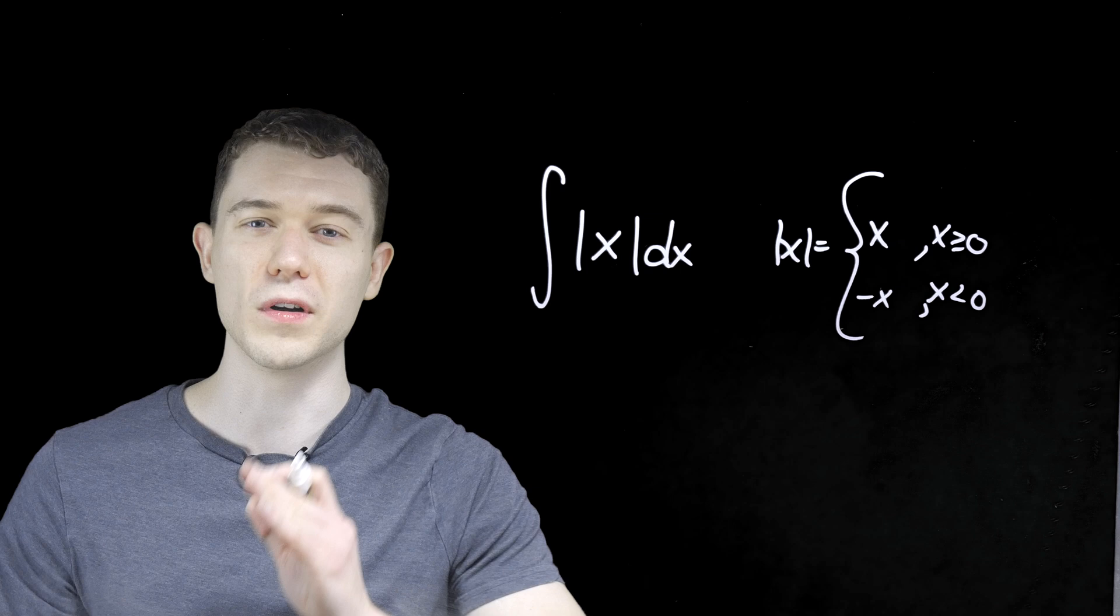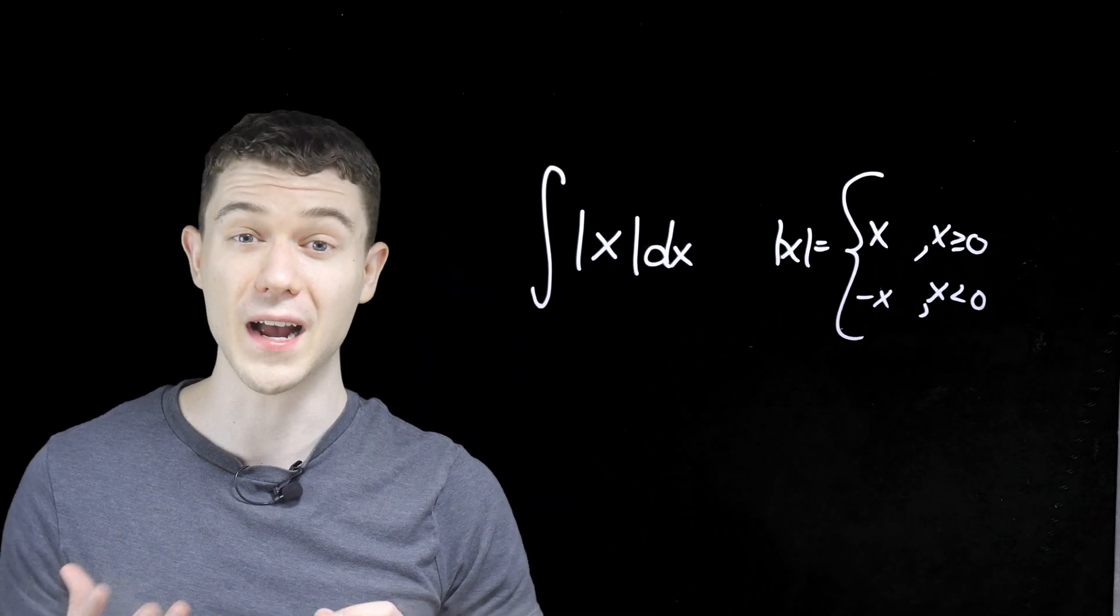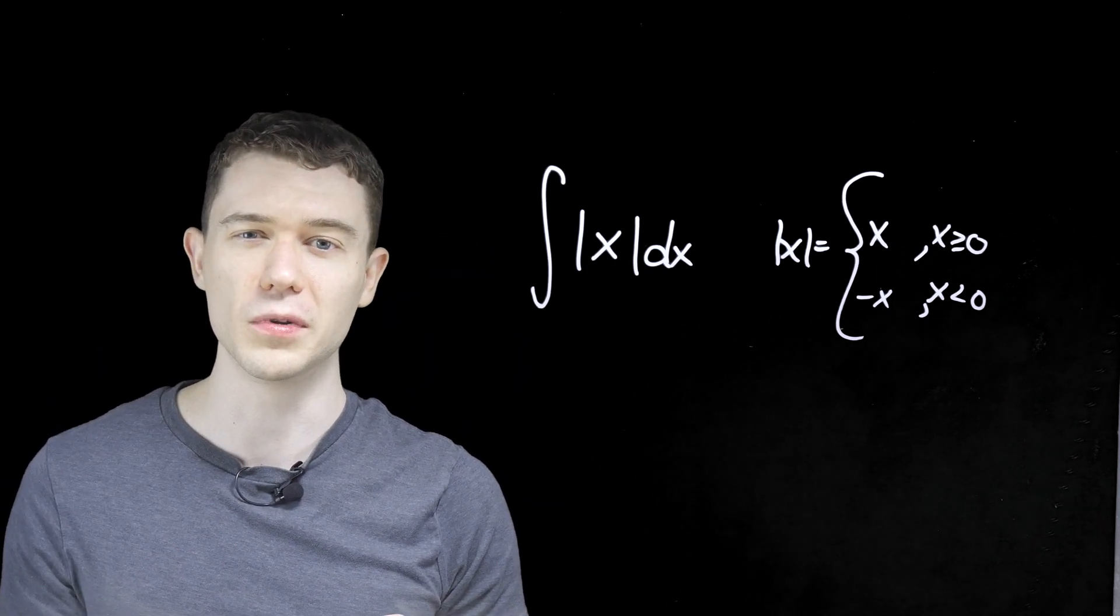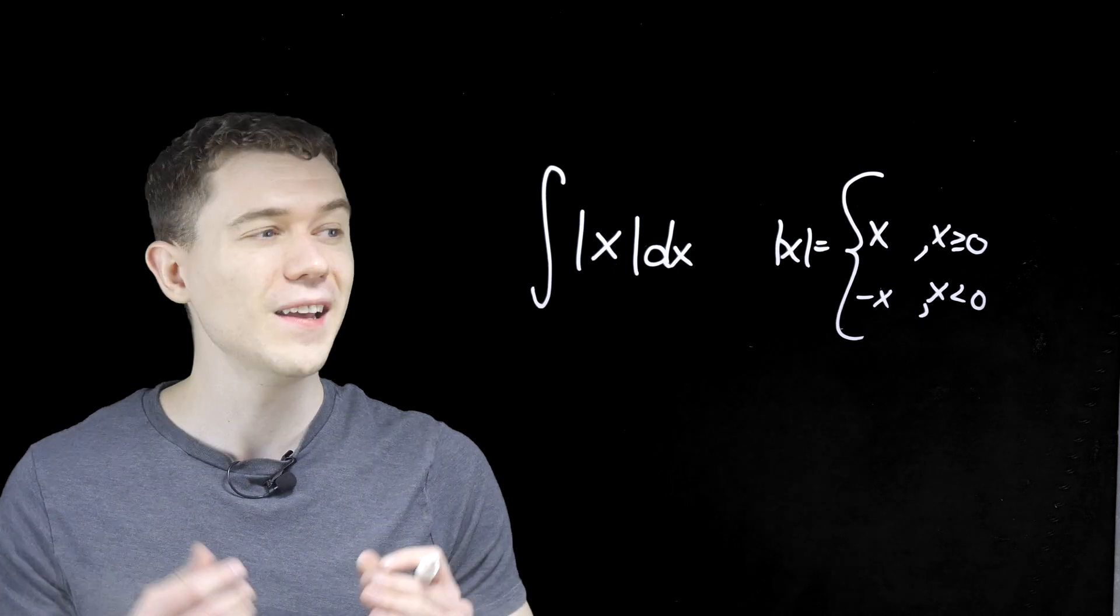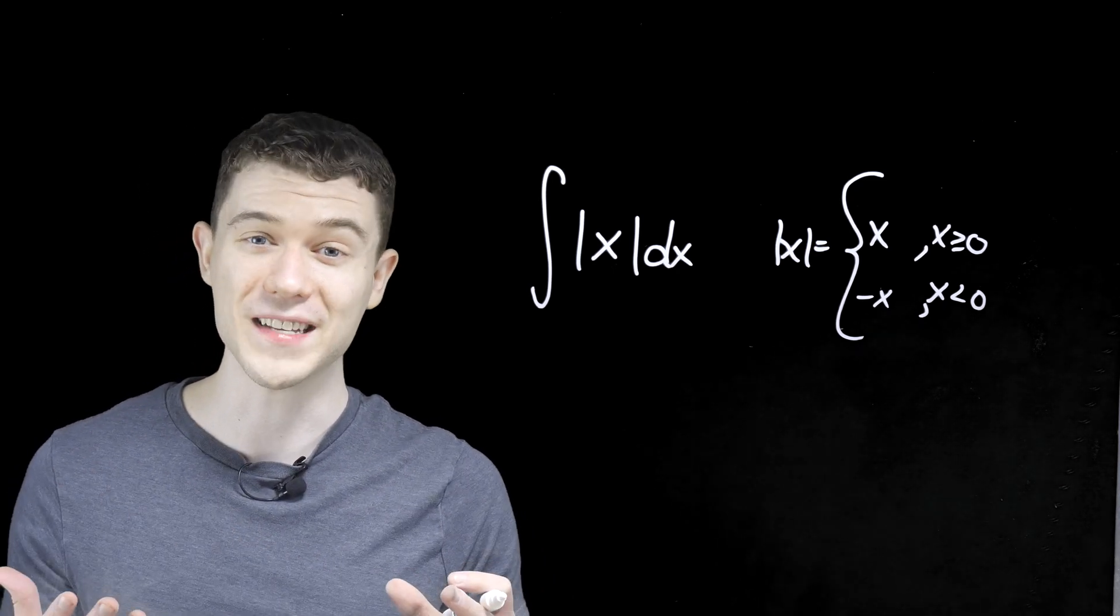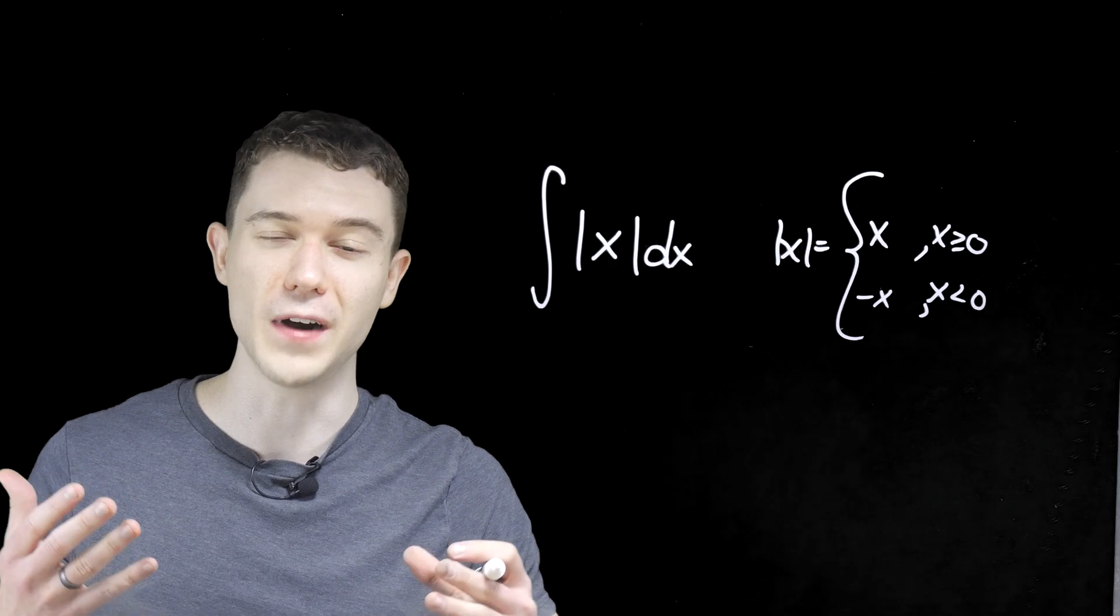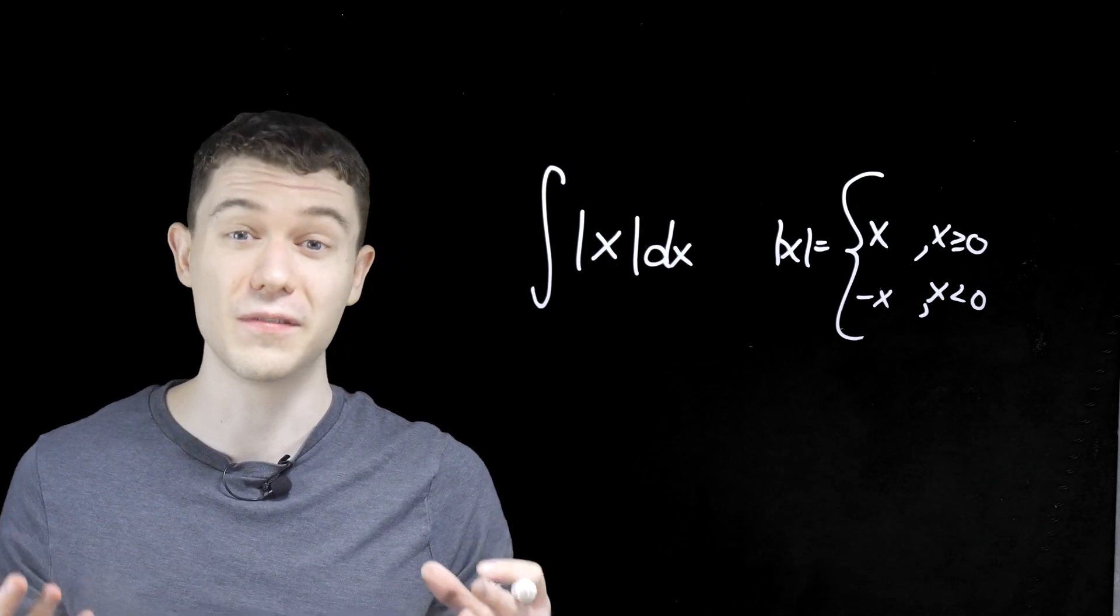That gives it its v-shape, where it's a positively sloped line after zero, a negatively sloped line before zero, and what makes any input output to be a positive value. The absolute value of five is five, the absolute value of negative five is five.